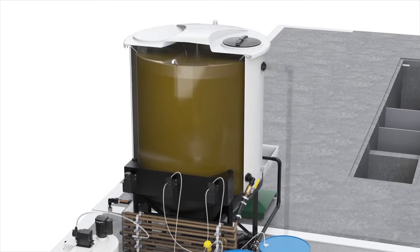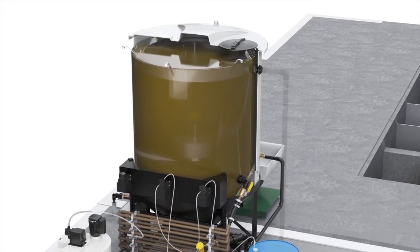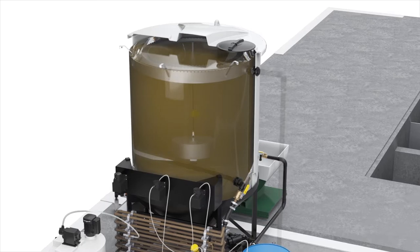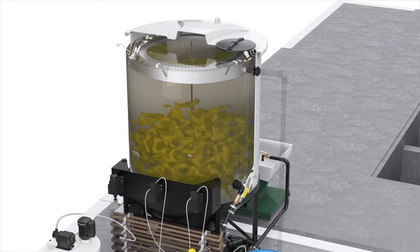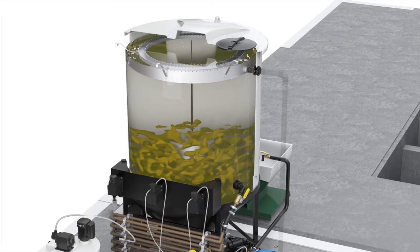The settling process causes most solids to drop to the bottom of the tank, where they are periodically purged into a hopper for disposal. Lighter contaminants rise to the surface, where they are skimmed off.